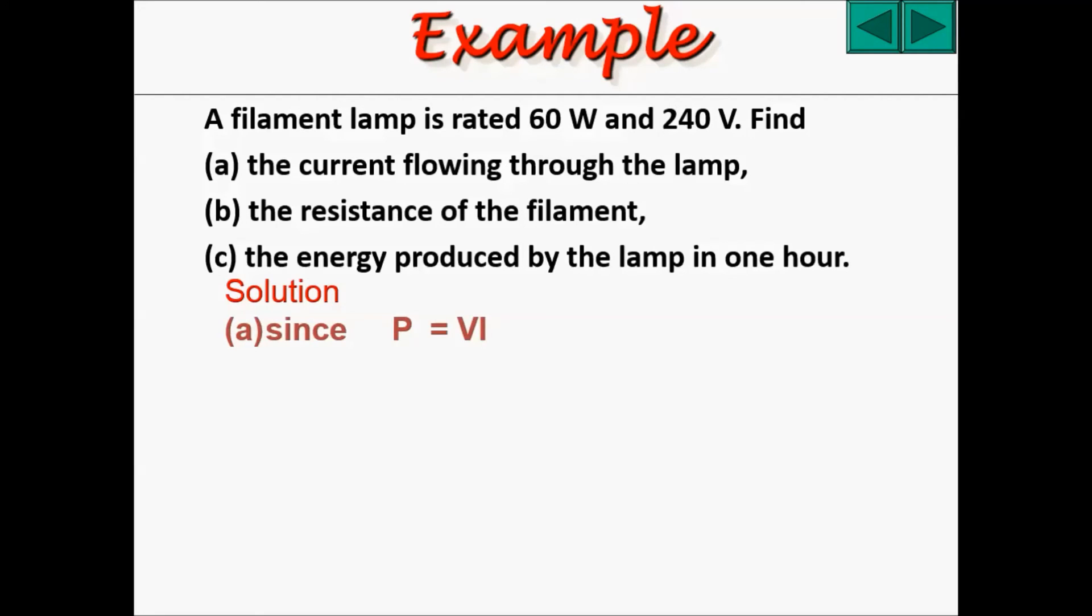The solution to this problem is, since P equals to VI, I equals to P over V, and therefore, you can sub in the power of 60 and the voltage of 240, which gets you a current flowing through of 0.25 amperes.